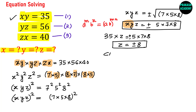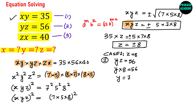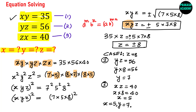We now have two cases. Case 1: Z = +8. From equation 2, YZ = 56 with Z = 8 gives Y = 7. From equation 3, XZ = 40 with Z = 8 gives X×8 = 40, so X = 5. The solution for case 1 is X = 5, Y = 7, Z = 8.